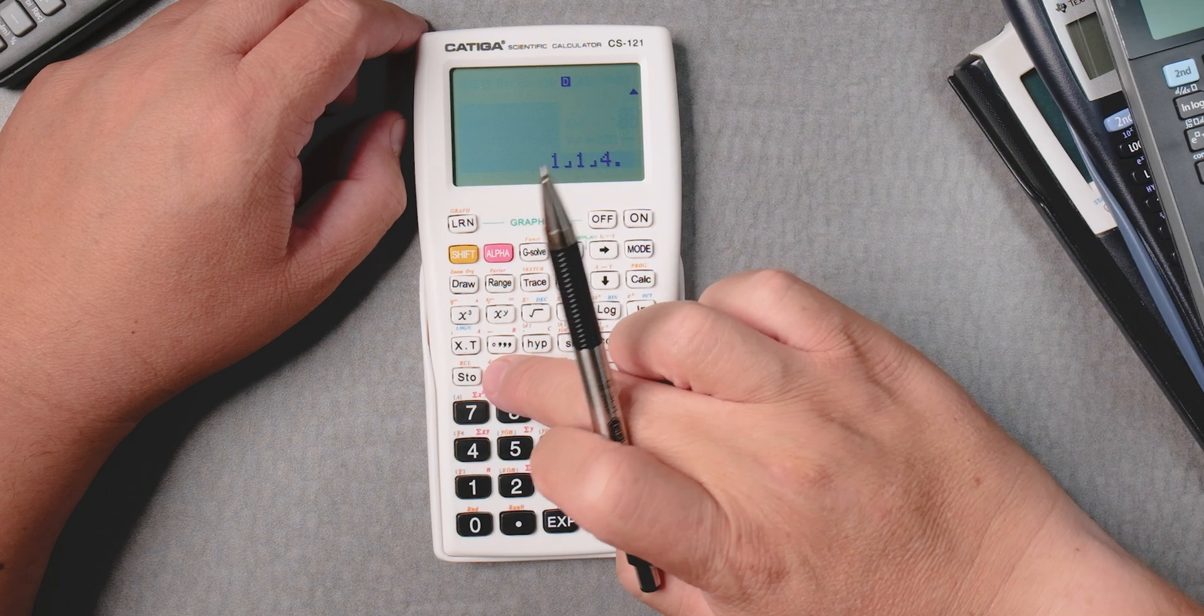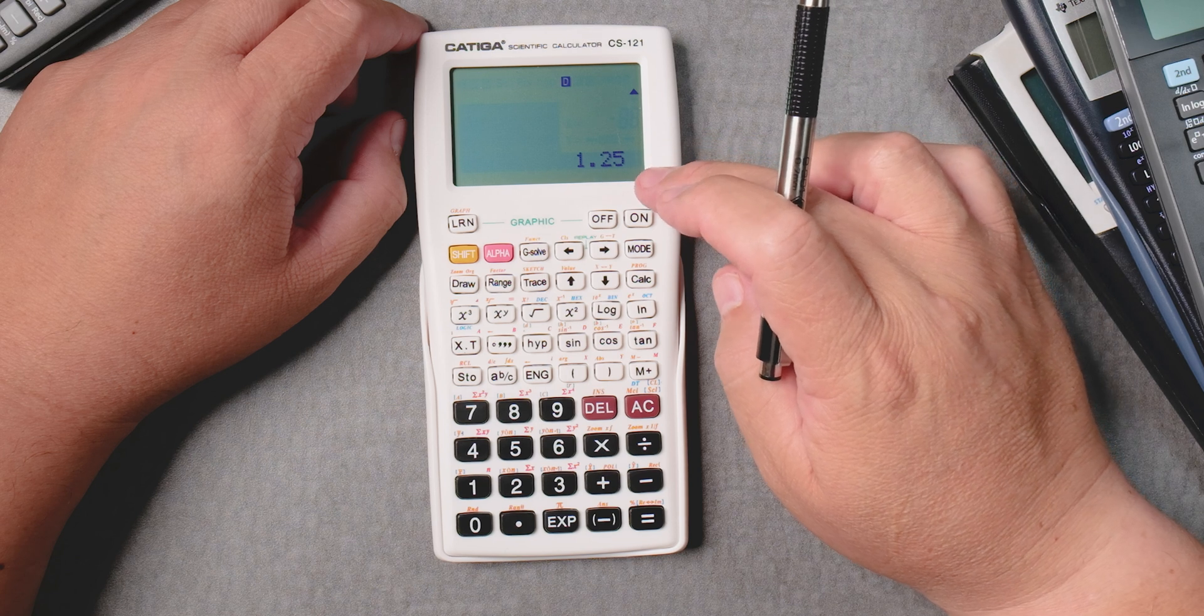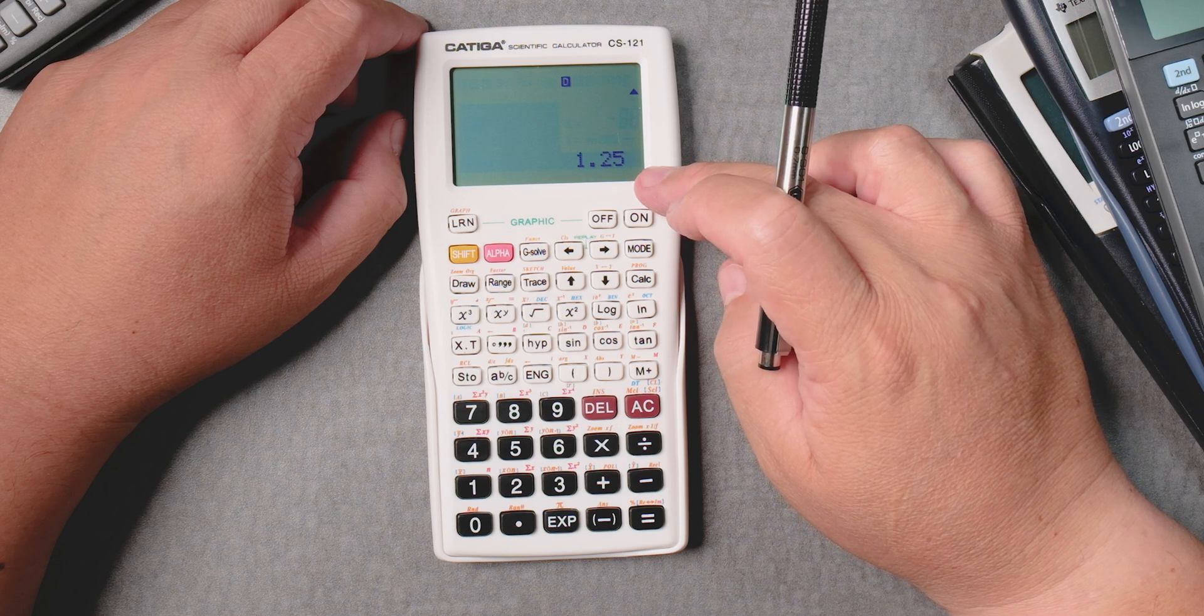Press ABC again. Let's see. Yes. It won't give you that. It gives you the decimal version.